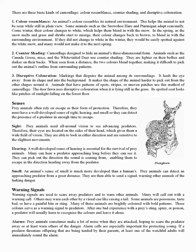Disruptive coloration uses markings that disguise the animal among its surroundings. It leads the eye away from its shape and into the background, making the shape of the animal harder to pick out. Animals that have patterns of spots, stripes, or uneven patches use this method of camouflage. The deer fawn uses disruptive coloration when lying still in the grass — its spotted coat looks like patches of sunlight falling on the forest floor.